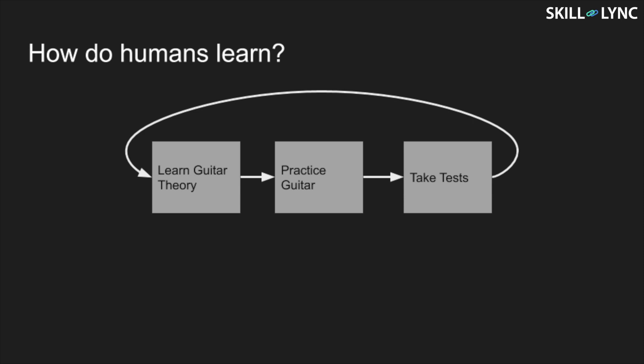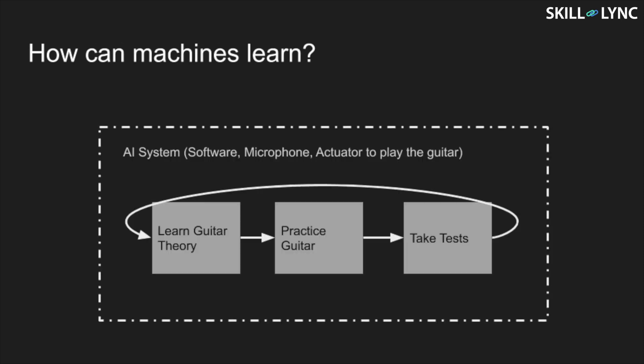A machine would have to first train itself, meaning the software program has to have the ability to listen to music and reproduce it on a guitar while correcting itself from time to time. You need an AI system which can listen to and play guitar. That is what machine learning is all about. Machine learning is the process by which a machine acquires artificial intelligence. When machine learning takes place, there is a piece of software in that machine which tries to help the machine learn whatever it is trying to learn.